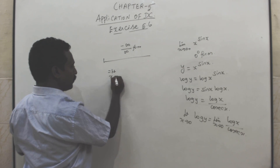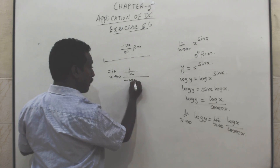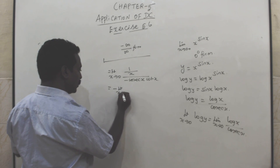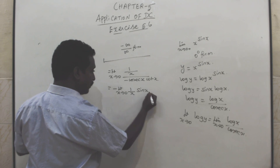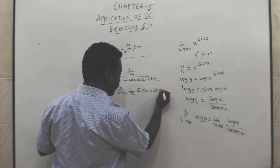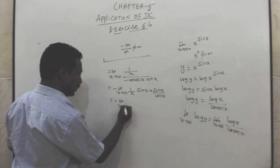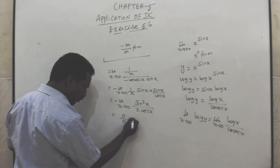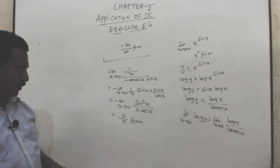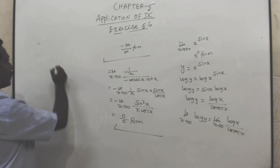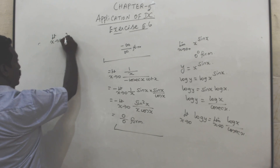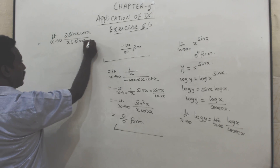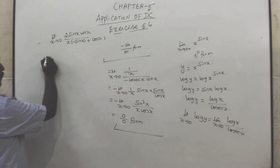Differentiate: numerator (log x)' = 1/x, denominator (csc x)' = −csc x · cot x. This simplifies to (1/x) / (−csc x · cot x) = sin²x / (−x · cos x). Wait — rewriting: 1/csc x = sin x and 1/cot x = tan x = sin x/cos x, giving −sin²x / (x·cos x). Substituting x = 0 gives 0/0 form, so apply L'Hôpital again. Differentiating: (sin 2x)' / (cos x − x·sin x)' → result is 0, so limit log y = 0.